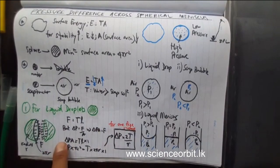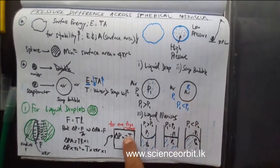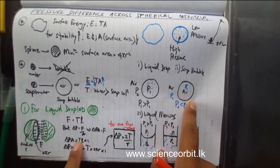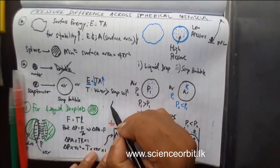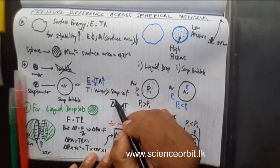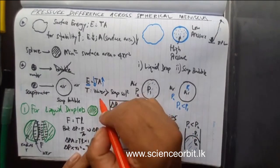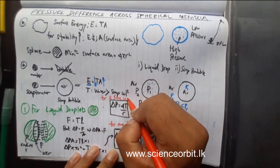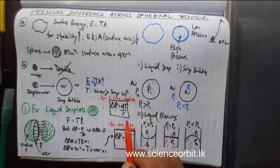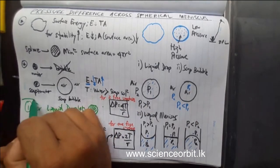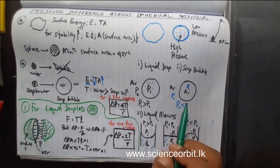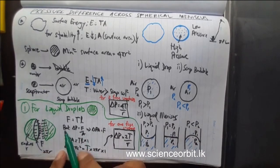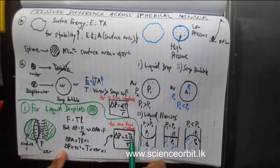This equation ΔP = 2T/R is for liquid drops. If you apply the same working for soap bubbles, the steps are the same but here we will have to multiply by 2, because a soap bubble has 2 free surfaces. Hence the equation will be altered to: ΔP = 4T / R, if it has 2 free surfaces. This equation is for 2 free surfaces. The only change you make in the procedure is multiplying by 2 — because there are 2 free surfaces — and instead of 2T/R you get 4T/R.